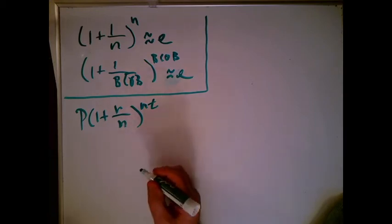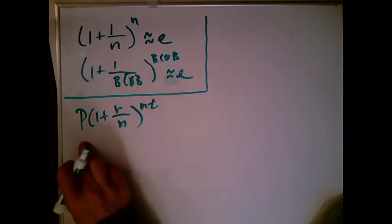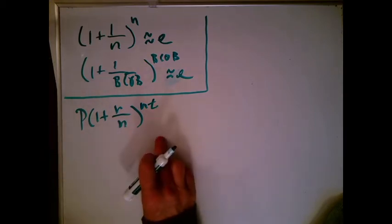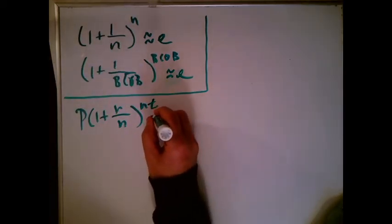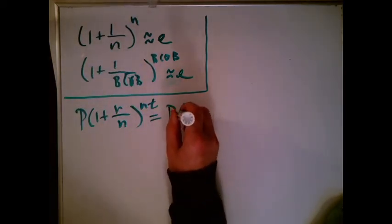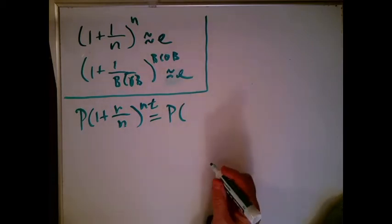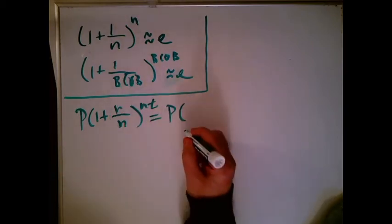So what I want to do here, I want to make the ordinary compound interest formula look more like one plus one over blob to the blob. So the very first thing I'm going to do is rewrite the fraction R over N so that it's one over something to make it look more like one over blob.